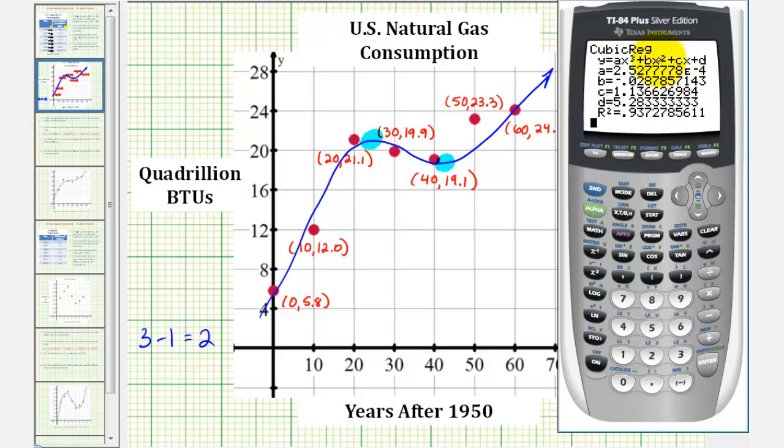Also notice that A here is given in scientific notation. This means 2.5277 times 10 to the negative fourth. So this is really 0.0002527, and so on.